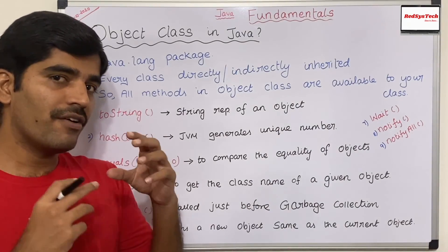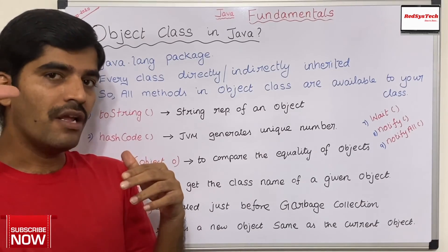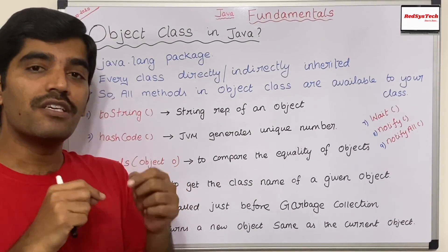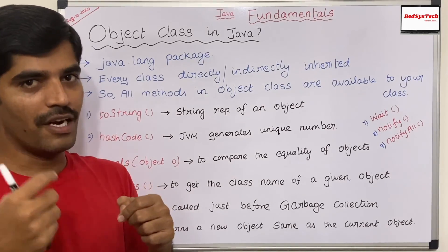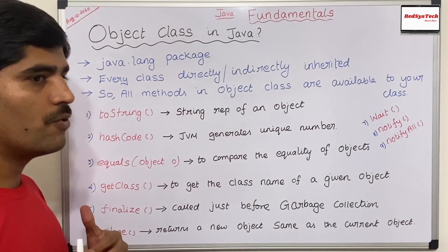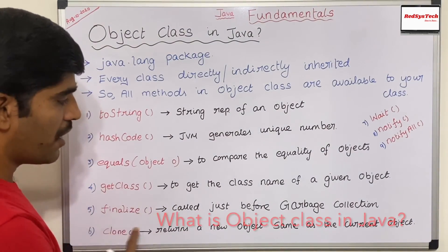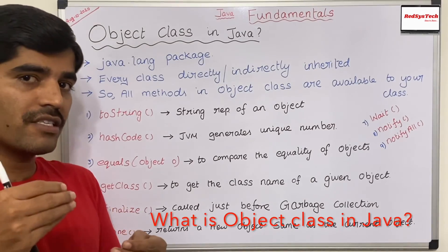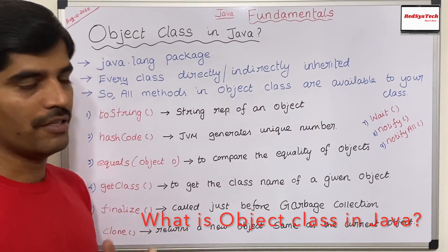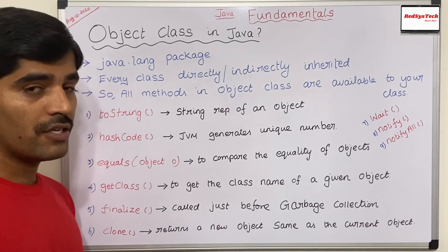The finalize method: as we know, all objects we create in a Java program are stored in heap memory. Objects not referenced by any object reference variable are available for garbage collection. The finalize method is called just before the garbage collector collects the object, allowing any cleanup to occur before the object is destroyed.